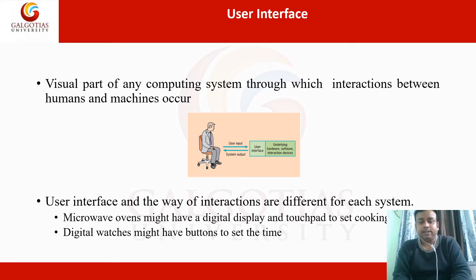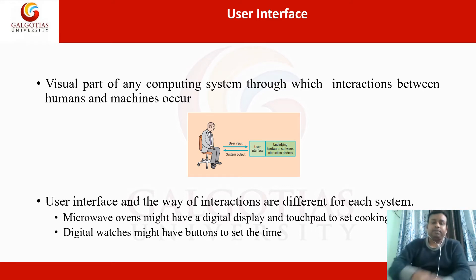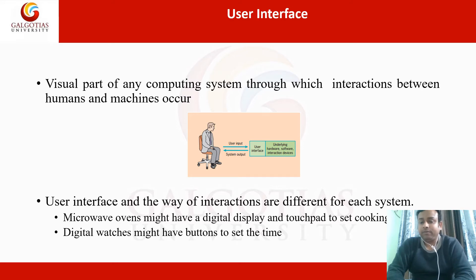User interface and the way of interactions are different depending on the device. For example, a microwave oven might have a digital display and touchpad to set the cooking timer. Another example: a digital watch may have a button to set the time. In the microwave oven, the digital display is the interface through which you can set the cooking time, and in the digital watch you set the time using the button on the front.